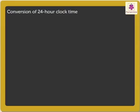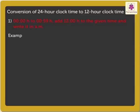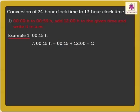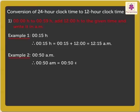Now let us see the conversion of 24-Hour Clock time to 12-Hour Clock time. Depending on the time intervals, the conversions are carried out as follows. For the time from 0000 hours to 0059 hours, add 1200 hours to the given time and write it in AM. For example, if the given time is 0015 hours, then add 1200 hours to get 12:15 AM. 0050 hours will be equal to 12:50 AM.